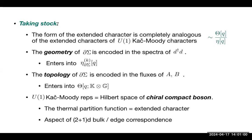U(1) Kac-Moody algebra representations also serve as Hilbert spaces of the chiral compact boson, whose thermal partition function takes the form of an extended character. This is one aspect of the bulk-edge correspondence in 2+1D. The corresponding statement in higher dimensions is: what is the theory whose thermal partition function gives an extended character and whose Hilbert space is organized by this algebra and its representations?